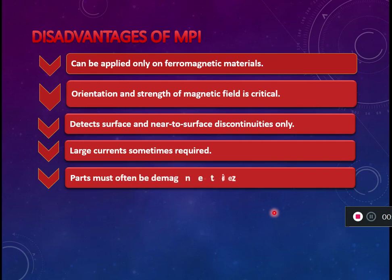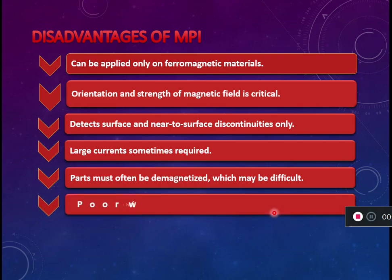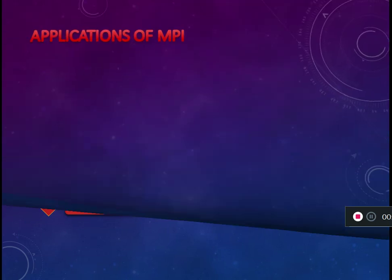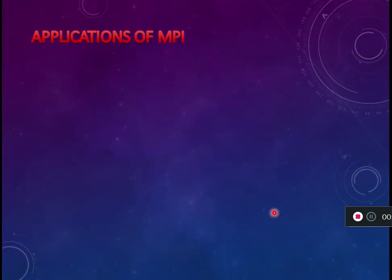Large currents are sometimes required. Parts must often be demagnetized after testing, which can be difficult. The method also performs poorly with thick coatings on the material surface.